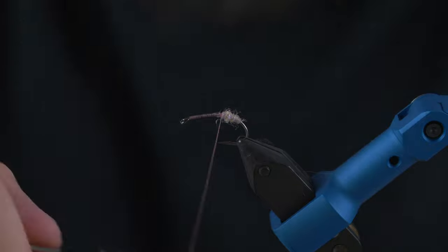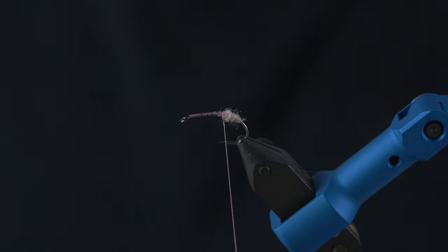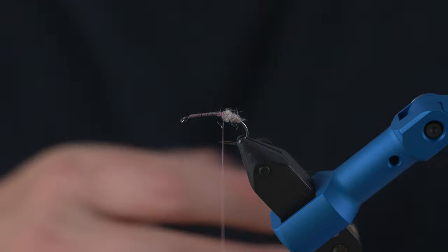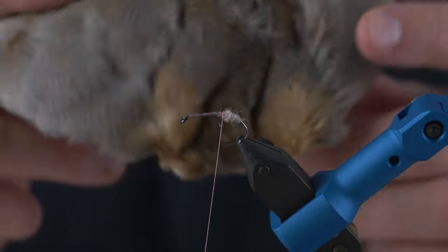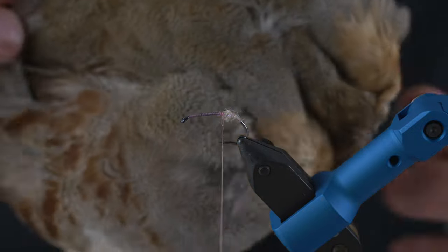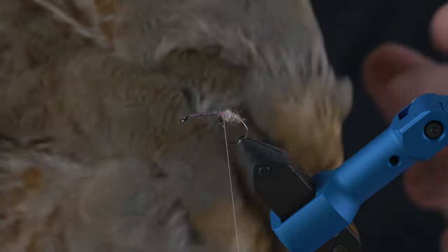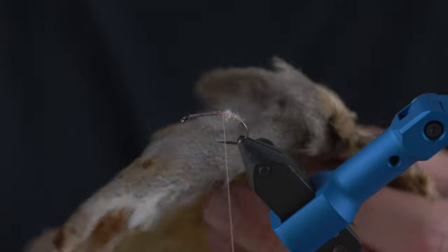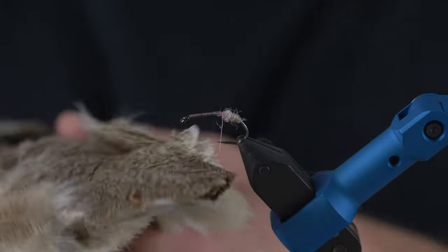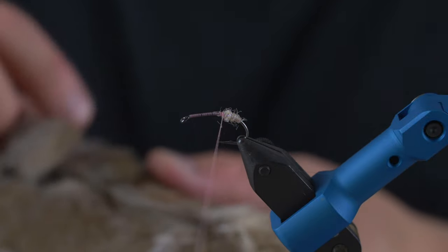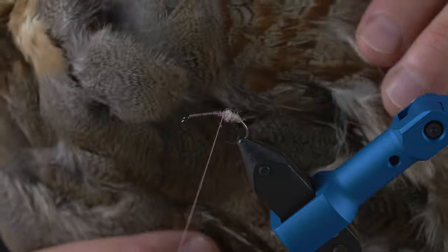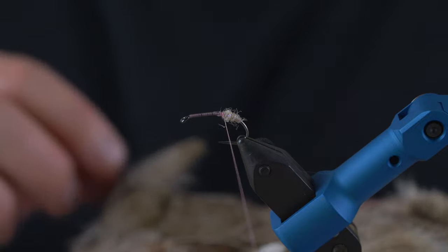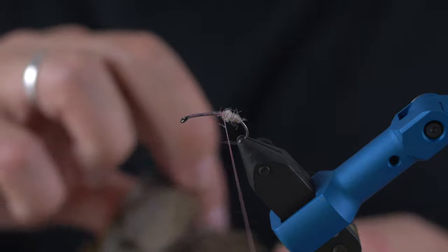So just a small amount of dubbing here and then we need to tie in the first hackle. For this I'm going to use partridge. Partridge is just an overall awesome feather, the markings on these are really cool. If you can get your hands on a full skin then do that, they are quite hard to come by from time to time.